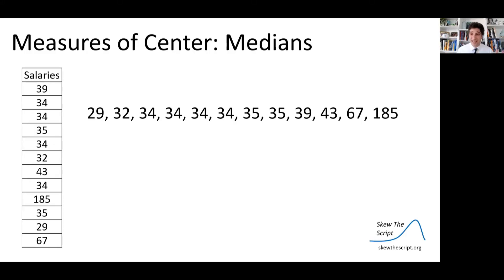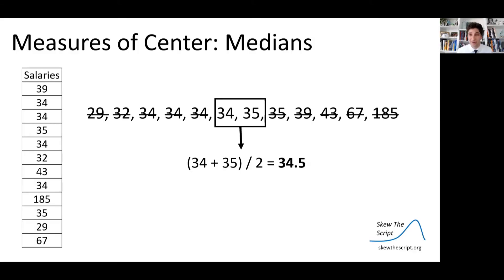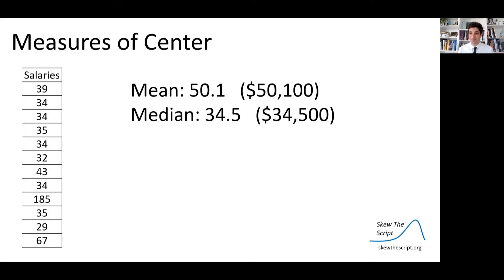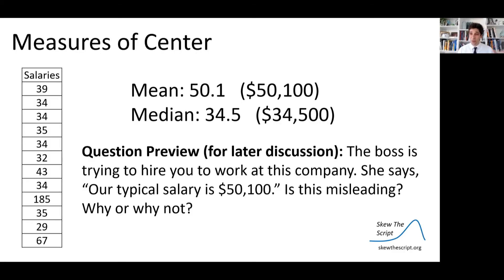Another common measure of center is the median. The first step to find the median is to line up your data in order from smallest to largest, then start crossing off. Cross off the lowest value ($29,000) and highest value ($185,000), and keep crossing off one by one. Here we're left between two central values: $34,000 and $35,000. When stuck between two values — which happens with an even number of data values — add those values and divide by two to get the midpoint. That gives a median salary of $34,500.